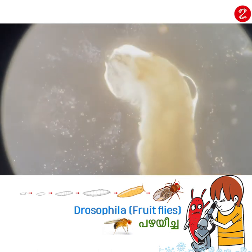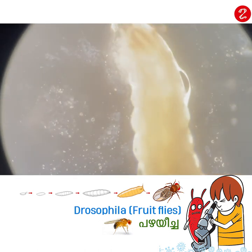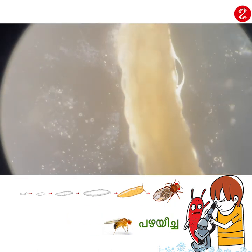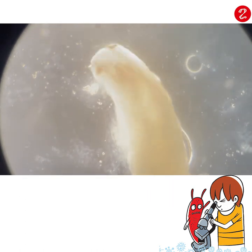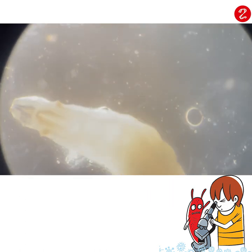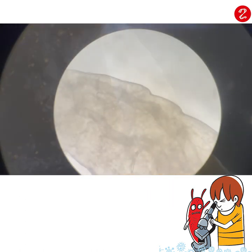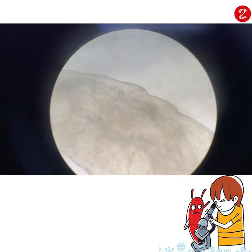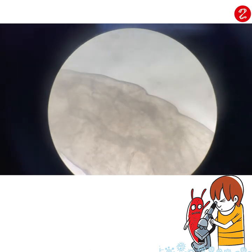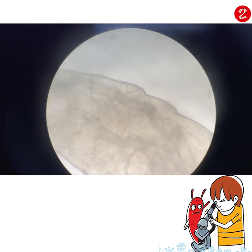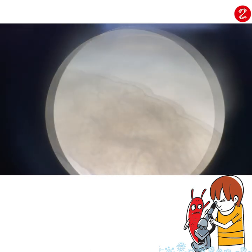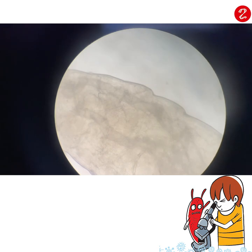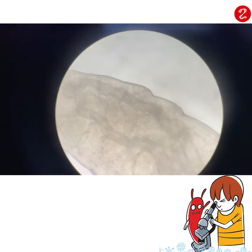We are going to squash it. Now we are going to look at the spiracles. In this life stage, the insects take in air. This is the tracheal system.